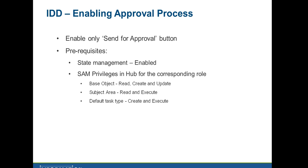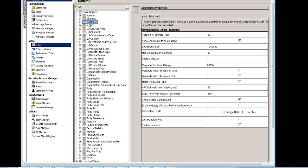Let's see how to configure both use cases in MDM. The first use case is enabling the approval process in IDD, which means enabling only the send for approval button. There are some prerequisites. The first prerequisite is you have to enable state management for the corresponding base object. In MDM, I have two base objects — customer and organization — and for the customer BO, state management is enabled under advanced properties.